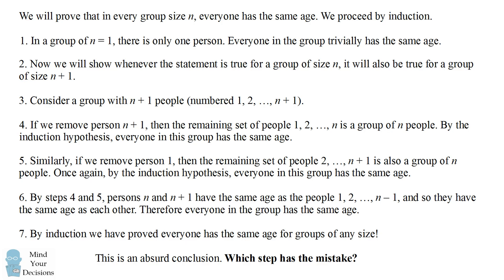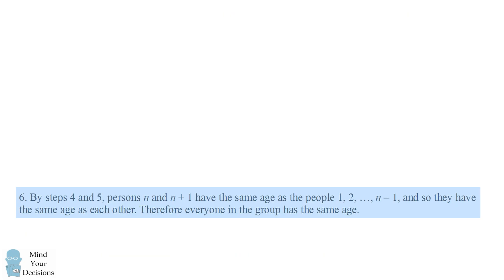So each step in this proof is valid except for step 6. It is not true that persons n and n plus 1 will have the same age, even though they could have the same age as everyone else in the group. Why is that? The statement is not always true with a group of just 2 people. Consider a group with 1 and 2. If we remove person 1 from the group, then everyone remaining, which is just person 2, that person does have the same age.